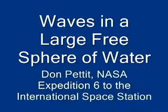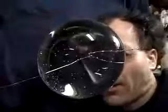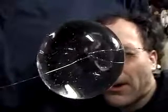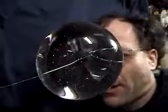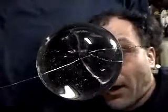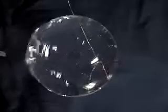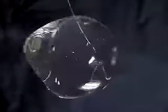Waves in a large free sphere of water. Here we have a large free sphere of water about the size of my head, 130 millimeters in diameter, and we put a puff of air — 10 cc's and 100 milliseconds — radially directed in from the side, and look at the resulting waves.